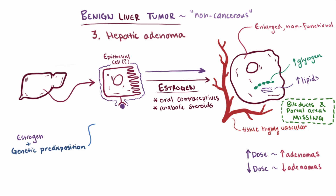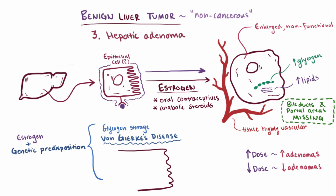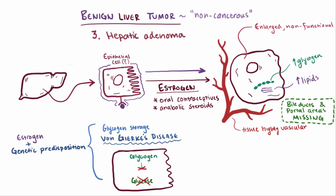Along with OCPs, genetic glycogen storage diseases, particularly von Gierke's disease, are also highly associated with hepatic adenomas. Patients with von Gierke's disease have liver cells that can't generate glucose from glycogen, though what isn't clear is why or how this deficiency tends to lead to hepatic adenomas. Although less common than other forms of benign tumors, hepatic adenomas are more likely to rupture and lead to internal bleeding, especially during pregnancy.